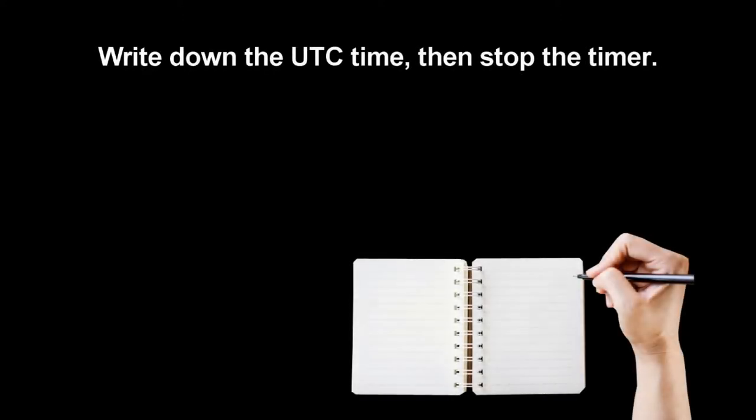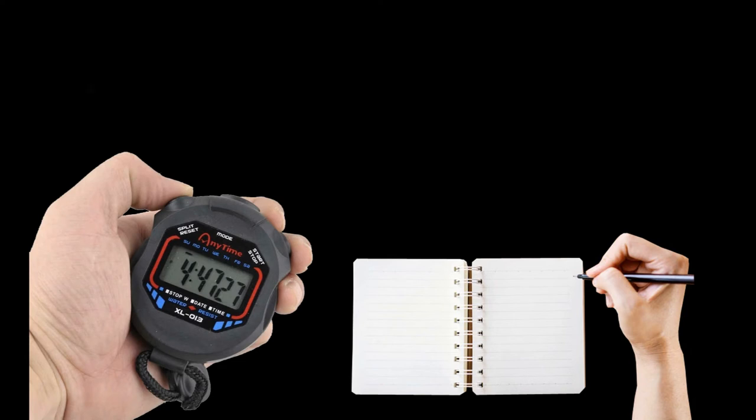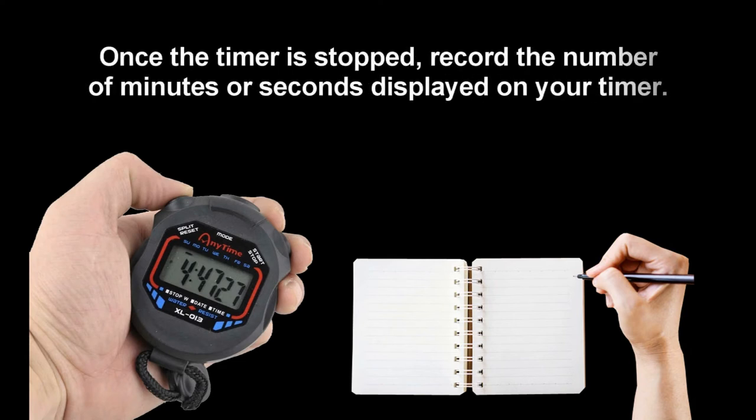After taking the bearing of the sun, and while the timer is running, go immediately to an equipment in the bridge where UTC time is available. Write down the UTC time, then stop the timer. Once the timer is stopped, record the number of minutes or seconds displayed on your timer.